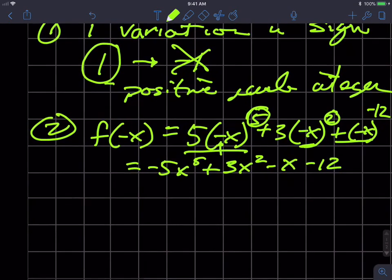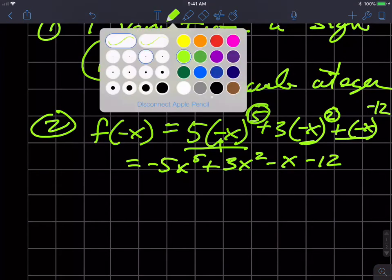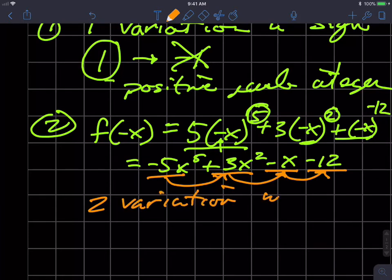Now, what I do is check the variation in sign. And in this case, we have negative going to positive, so that's one. Positive going to negative, so that's two. Negative going to negative, that's not a variation or change. So I have two. So for part two, I have two variations in sign.